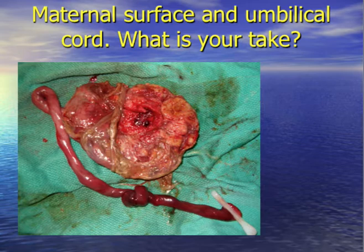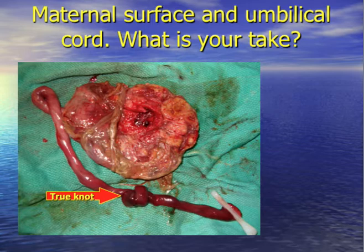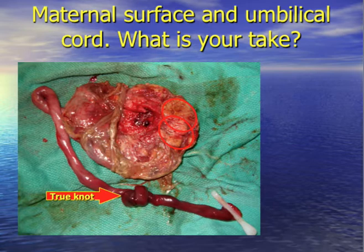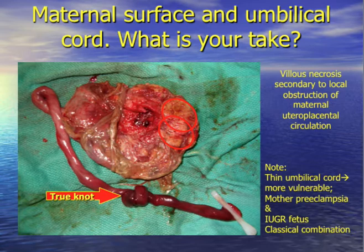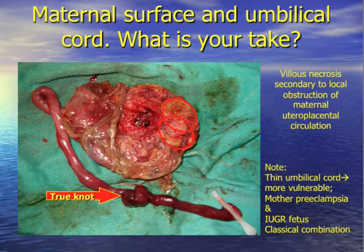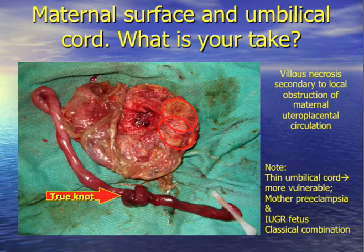Another variation: looking at the maternal surface of the placenta, you might recognize a true knot in the umbilical cord, and more importantly, look at the placenta — you can see a couple of white patches. These are known as infarcts, resulting from necrosis in the villi secondary to local obstruction of maternal uteroplacental circulation. These areas of the placenta were no longer well perfused, and the umbilical cord is also fairly thin, making it more vulnerable. This placenta clearly came from a mother suffering from preeclampsia combined with a growth-restricted fetus — a classical combination of placental deficiency due to infarctions.